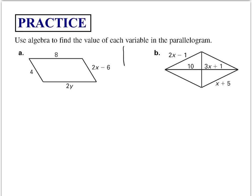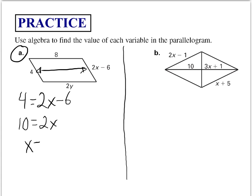Now let's use some algebra to solve for X and Y. And today we're just going to work on A. So we know that opposite sides of parallelograms are congruent. So we know 4 has to equal 2X minus 6. If we add 6 to both sides, we get 10 equals 2X, and X equals 5.